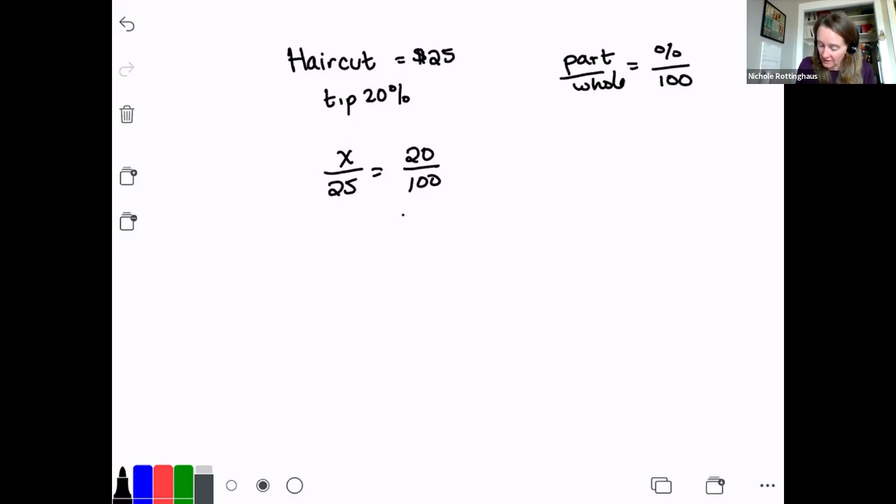If I solve this problem, I do 25 times 20 is equal to 100 X, and X is going to be equal to $5. So the tip is $5. If I wanted to figure out the total cost, I would just add it together. I would add it to the original cost. So the total amount that I'm going to leave for the hairdresser is $25 plus $5 or $30. Now this problem didn't have tax involved, so you didn't have to worry about tax.